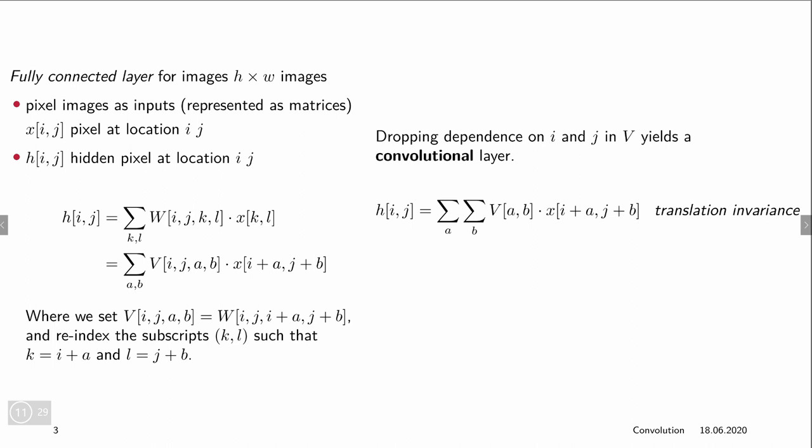So instead of also indexing it by i,j, the entry of the hidden layer is only indexed by these offsets which means that it's basically yielding the same value no matter what i,j is. And this is exactly what our translation invariance is.